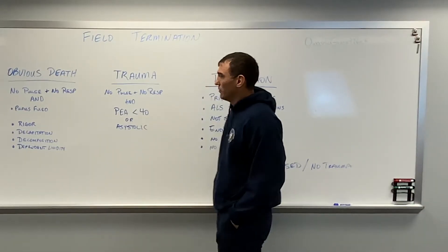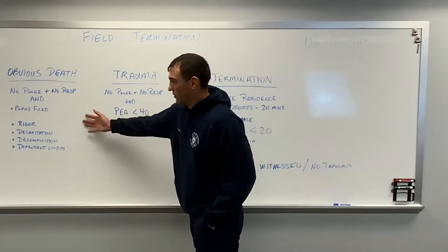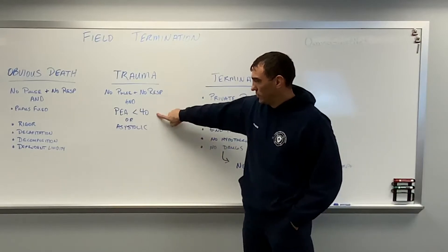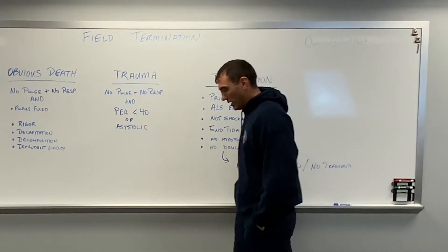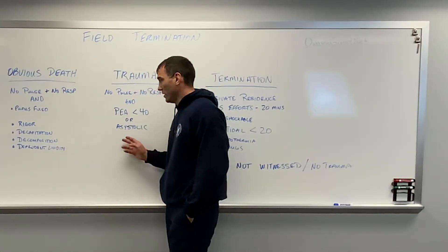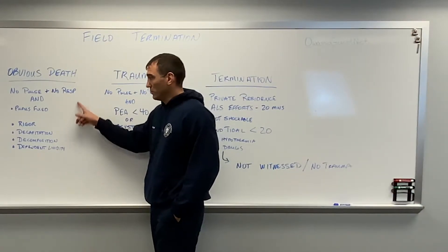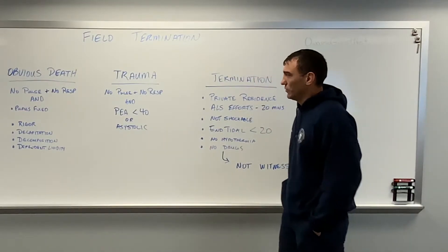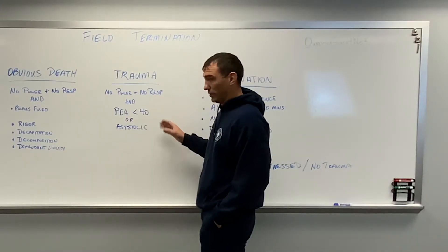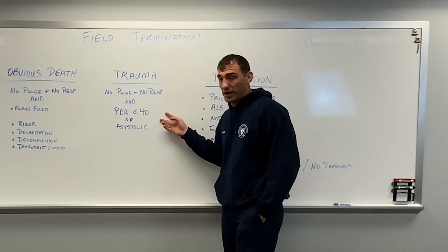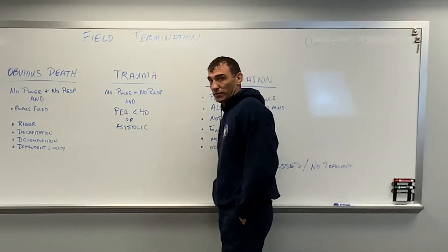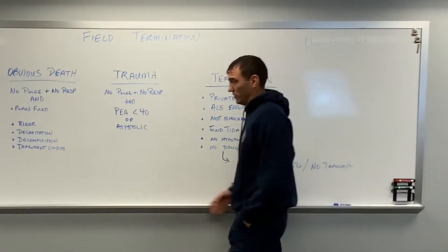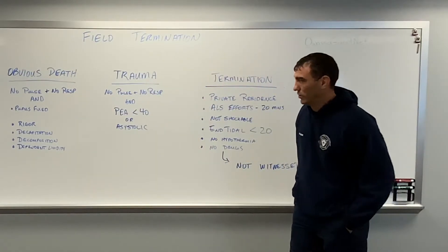In trauma, the difference is PA less than 40. For an unwitnessed medical arrest without obvious signs of death, if we have an asystolic rhythm or PA above 40, we can call that person. But trauma requires PA less than 40 or you must put four leads on that patient and verify they're in one of those two rhythms. Good practice for every arrest is to put pads or four-lead on and verify the rhythm. If a patient is obviously decapitated there's no need, but otherwise always verify.